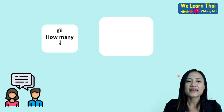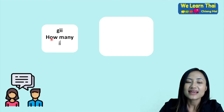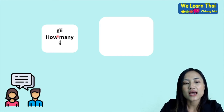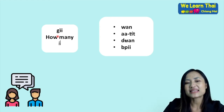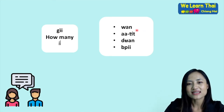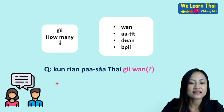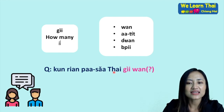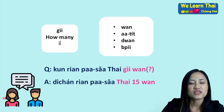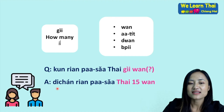Another word: กี่ means 'how many,' as we learned in chapter 4. Now for time: how many days is กี่วัน; how many weeks is กี่อาทิตย์; how many months is กี่เดือน; how many years is กี่ปี. In a sentence: คุณเรียนภาษาไทยกี่วันค่ะ? — How many days have you studied Thai? Answer: ดิฉันเรียนภาษาไทยสิบห้าวัน — I have studied Thai for 15 days.